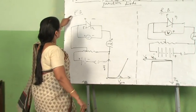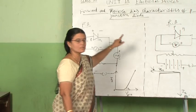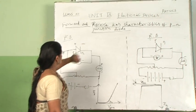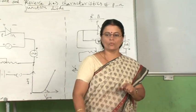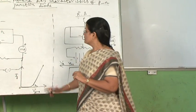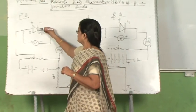So now we will see how to draw the forward and reverse bias characteristics of P-N junction diode. The characteristics are nothing but the graphs drawn between voltage value and current value.